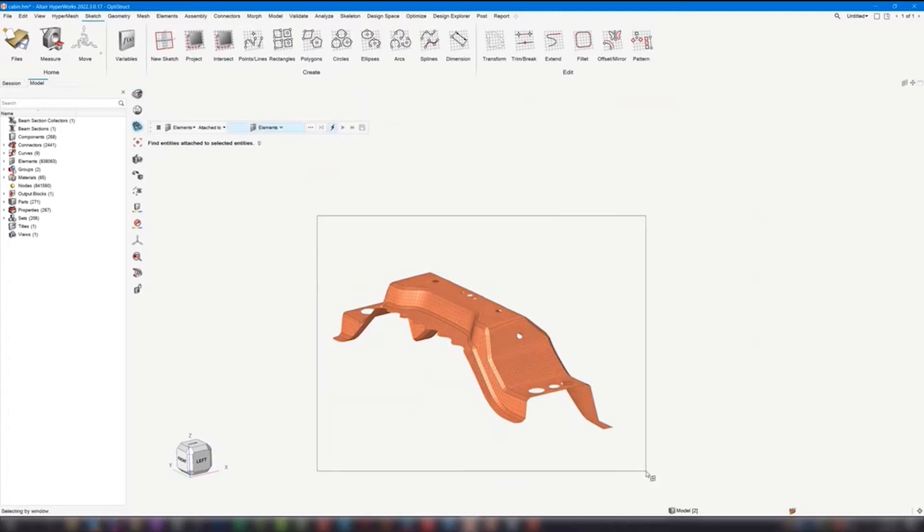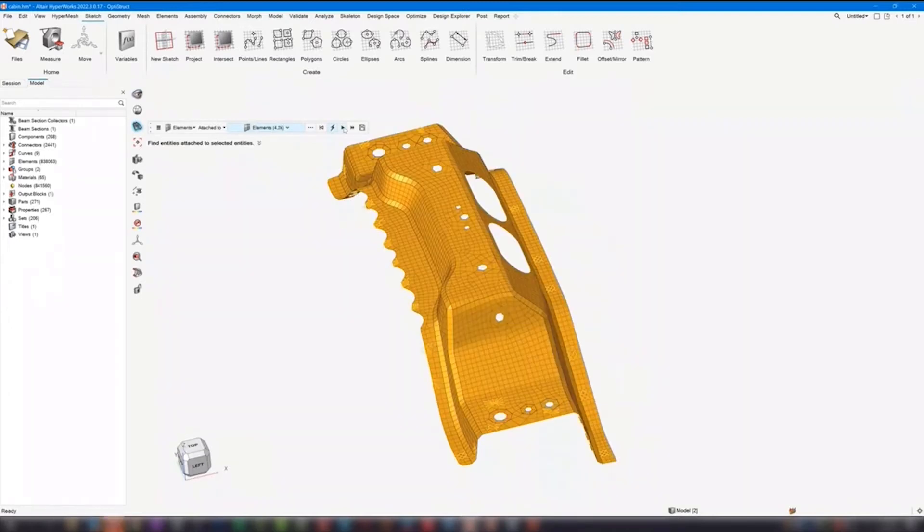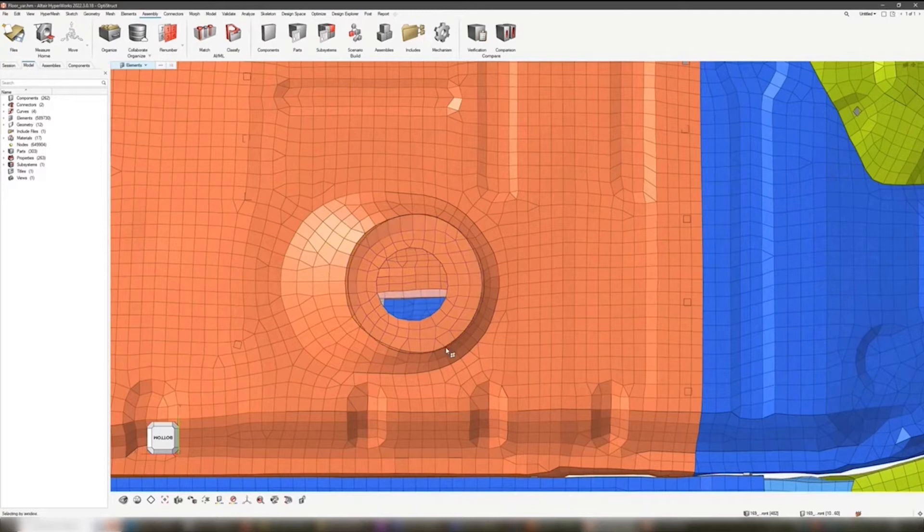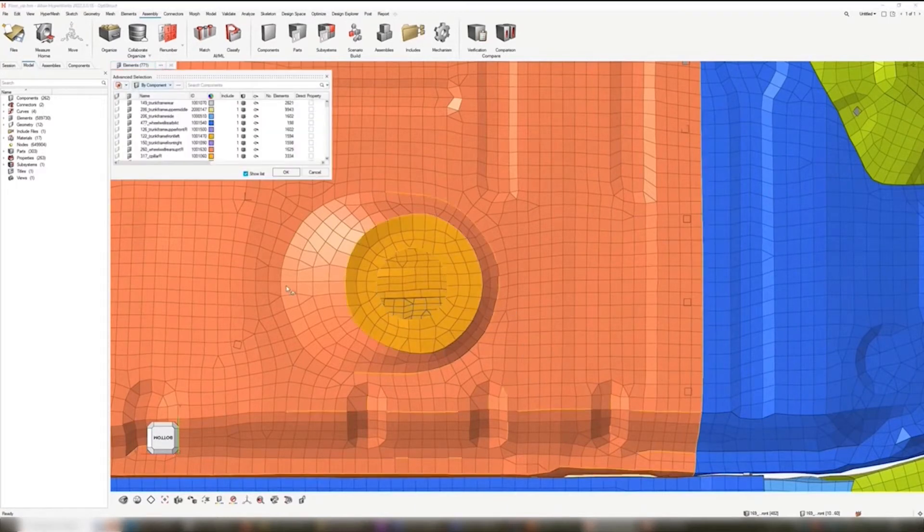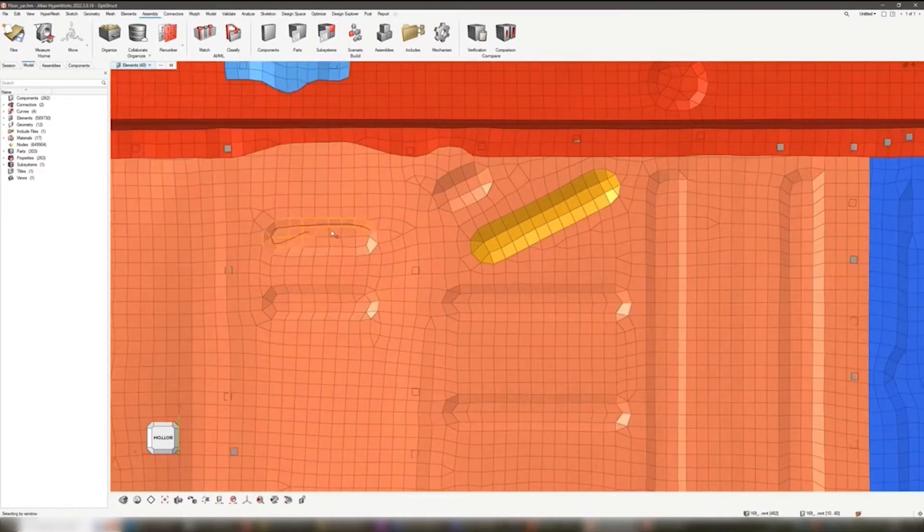It's all built into the HyperWorks interface, so it's intuitive. It is both CAD and solver agnostic, so it can work easily into most workflows and gives you advanced controls over your 1D, 2D, and 3D meshes with tools like auto mesh, mesh morphing, shrink wrap, batch meshing, and geometry editing.